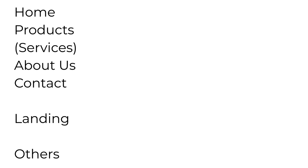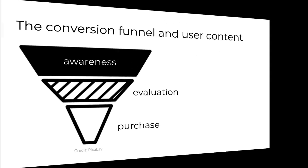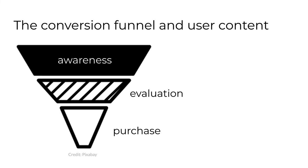Nearly every organizational website will include four types of pages: home, products or services, about us, and contact. Those are like the bare bones pages. Many organizational sites, especially larger ones, will also include landing pages connected to advertising campaigns, and likely some others like careers, news, or publications. Before we move on, it's worth discussing user content in terms of the sales or conversion funnel. The instructional materials from Kissmetric and HubSpot in Module 6 mention measuring as far down the funnel as possible.